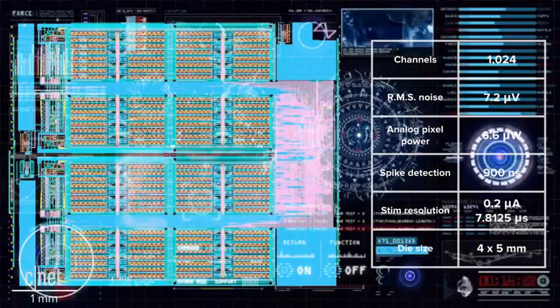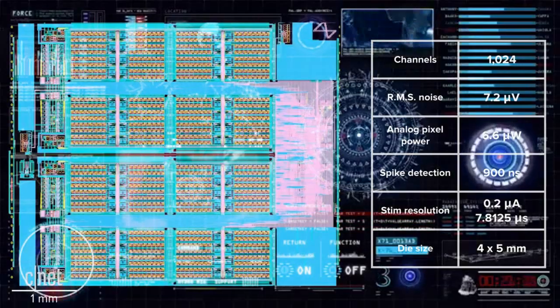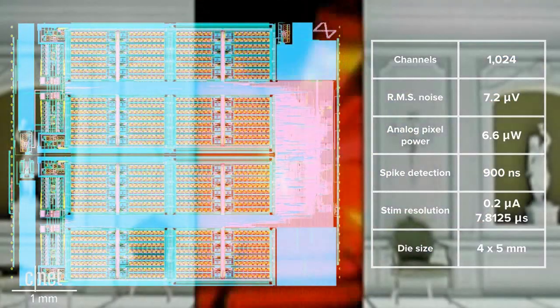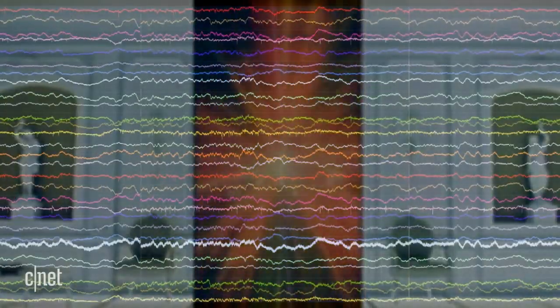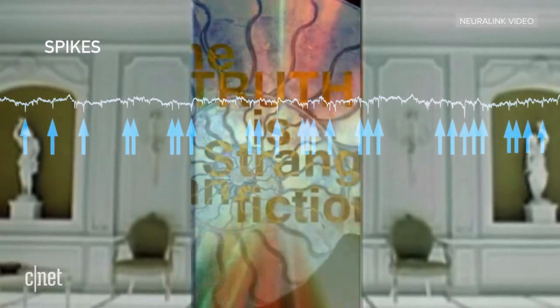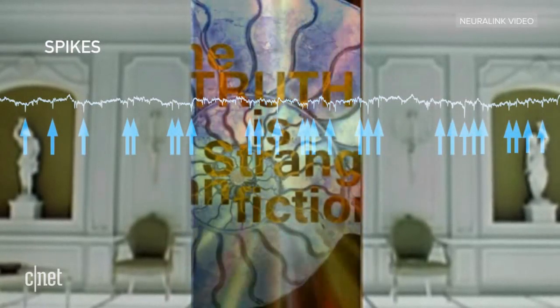All of these functionalities that I outlined are integrated into a single four-by-five millimeter chip die. This is, in fact, traces of a bunch of electrodes that came off of one of our devices. And each trace shows you a voltage waveform in time as it's coming off of one of those threads. We have algorithms that can detect these spikes in real-time as they're happening, and that allows us to collect data.